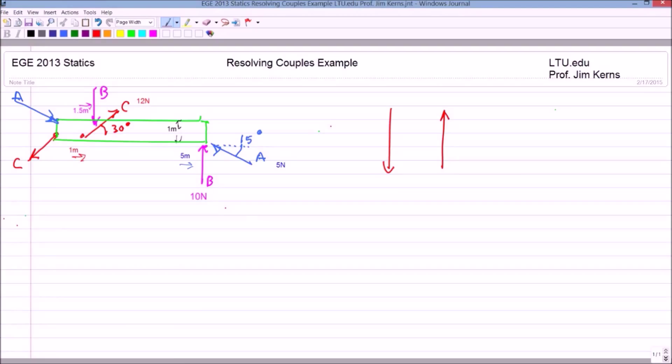But we do have a moment from each one. So let's pick an arbitrary point, we'll call it point O, we'll put it over here on the left. And let's find the moment due to each of those forces.